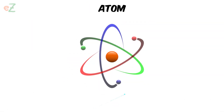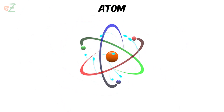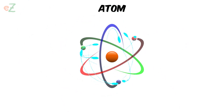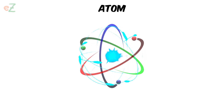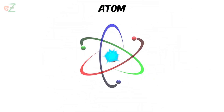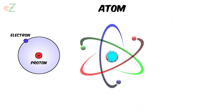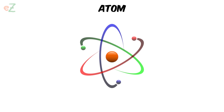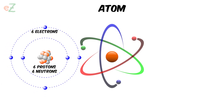Atom. The basic building block of matter. It is made of protons, neutrons, and electrons. There are many different kinds of atoms. For example, the simplest atom with one proton and one electron is a hydrogen atom. An atom with six protons, six neutrons, and six electrons is a carbon atom.